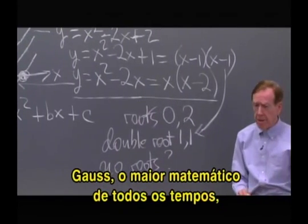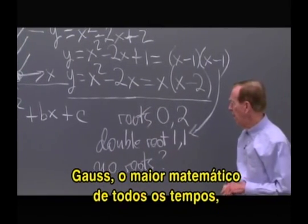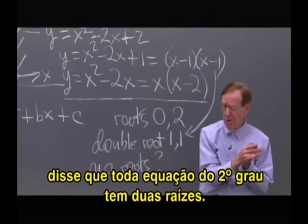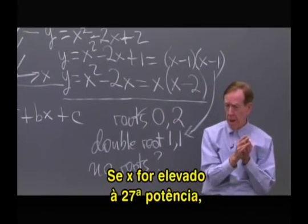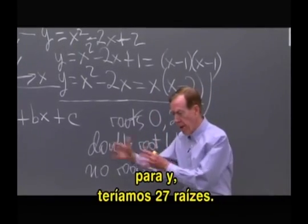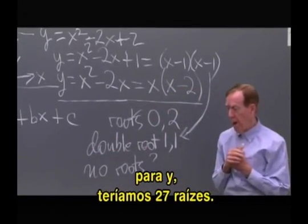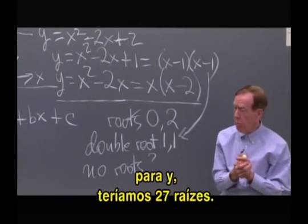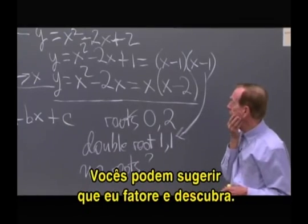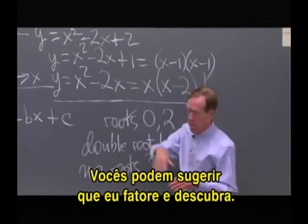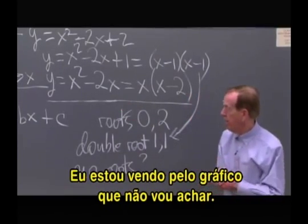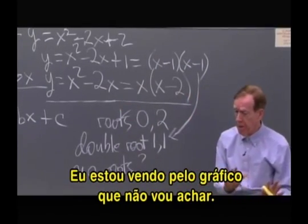Gauss, who was the greatest mathematician of all time, said that if we have a quadratic it should have two roots. If we had x to the 27th starting our y, there should be 27 roots. But where are they? You might say, well, just factor and find them. But of course I can see from the picture I'm not going to find them.